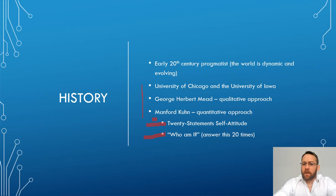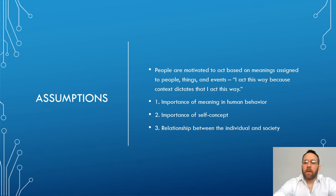That's what Kuhn and others were getting at with symbolic interaction: the definitions we have about ourselves are constantly shifting based on the context we're in.